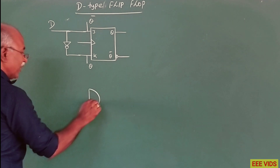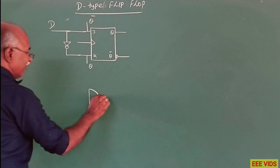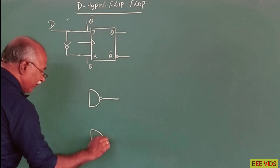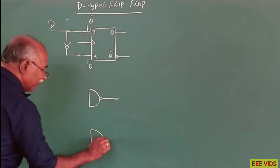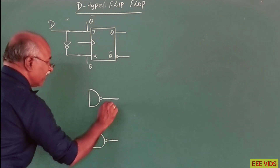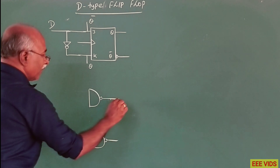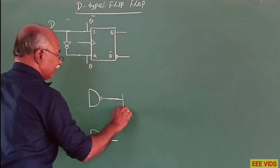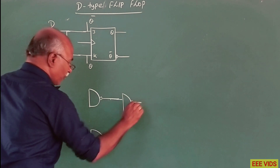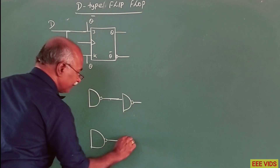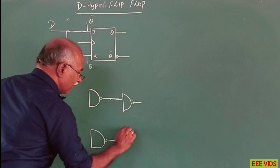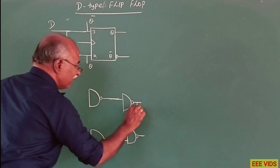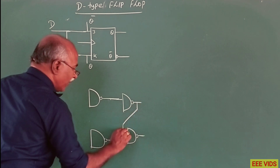The J-K Master-Slave flip-flop uses 4 gates, making it a large circuit. So the D-type flip-flop circuit diagram simplifies this.